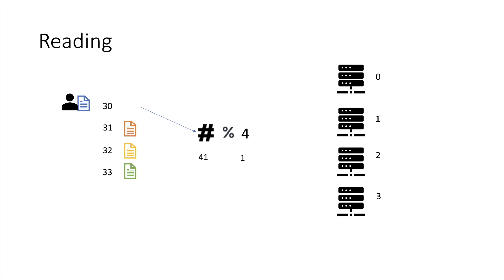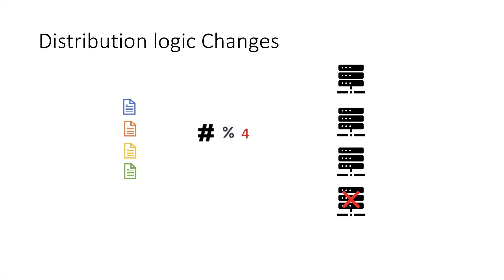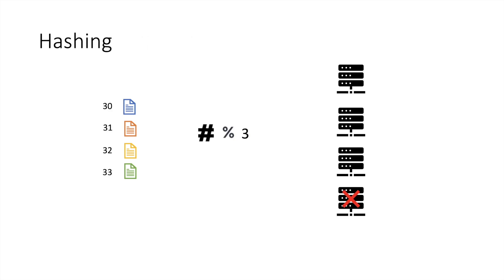But this has a problem. Imagine server 3 goes down. Our logic to distribute data is very much dependent on the number of servers. Here we have four servers so we are doing mod 4, but once a server goes down we are left with three servers, so we have to change the mod logic to 3.